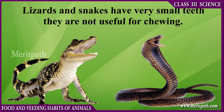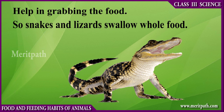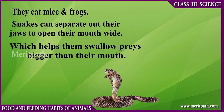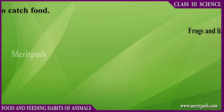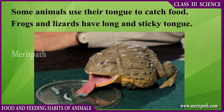Their small teeth are not useful for chewing, but help them to grab food. They eat mice and frogs. Snakes can separate their jaws to open their mouth wide, which helps them swallow prey bigger than their mouth. Some animals use their tongue to catch food. Frogs and lizards have long and sticky tongues.